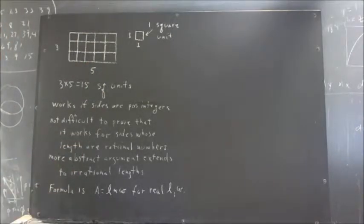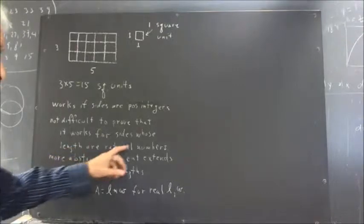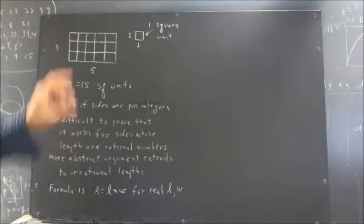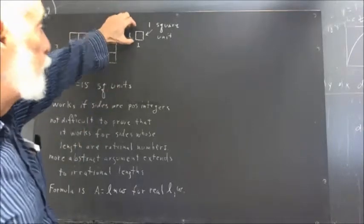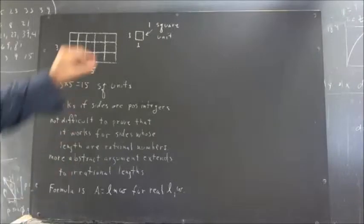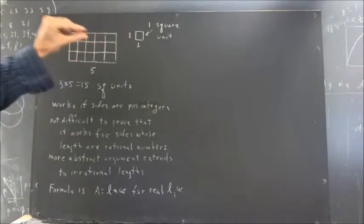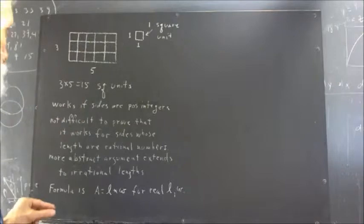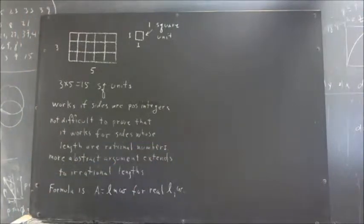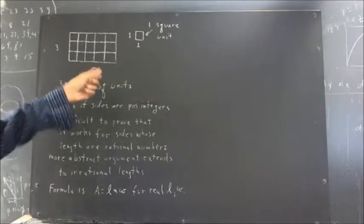If we use, instead of a one unit square, a fractional square, whose sides have length equal to the least common multiple of the denominators of the rational numbers, then we can make sense of that.